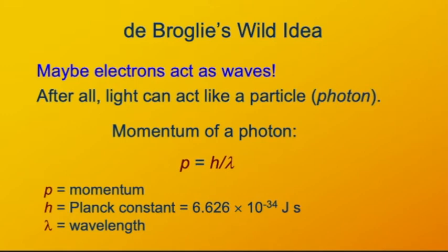It was known by this time, partly from the work of Einstein, that photons, particles of light, actually have momentum. That's a very particle-like property, and that's maybe something you didn't realize about light. And the momentum of light is related to the wavelength of light, in this fashion. Momentum, p, is equal to h, that's Planck's constant, which had been used in the context of light before, divided by the wavelength.